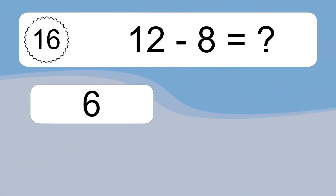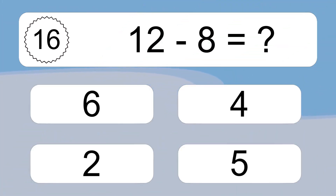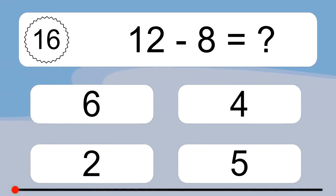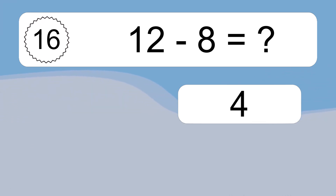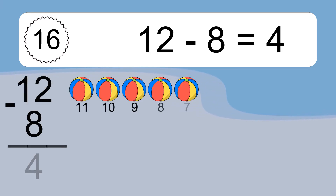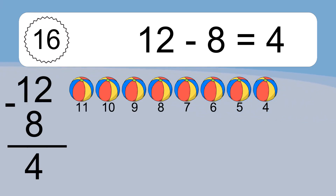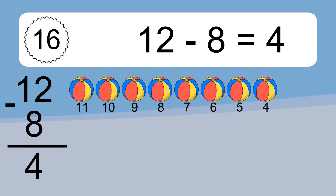12 minus 8 equals what? 12 minus 8 equals 4. Let's count it: 11, 10, 9, 8, 7, 6, 5, 4.